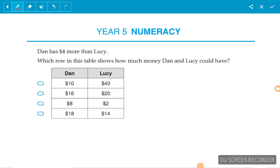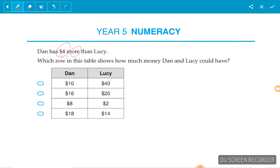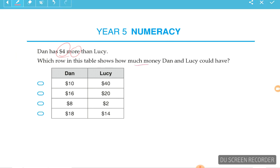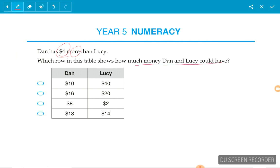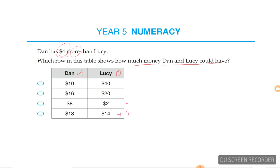Dan has four dollars more than Lucy. Which row in this table shows how much money Dan and Lucy could have? We've been told that Dan has four more than Lucy, so if we add four to each equation, we should be able to come up with these answers.